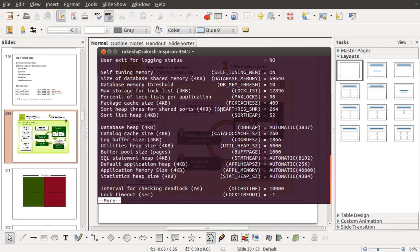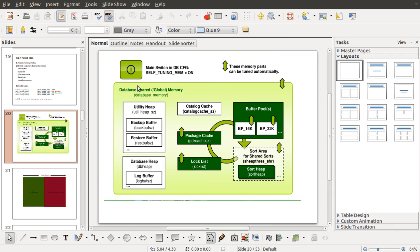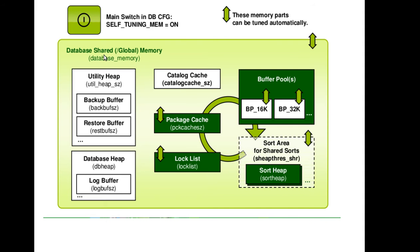Hello guys, in my last tutorial we saw about the self-tuning memory parameter, and in this class I will be talking about the database memory and the database memory threshold. So basically, what is database memory? To understand what is database memory, let's look at this PPT. I used the same slide on my self-tuning memory parameter where I said that database memory is part of the self-tuning memory. Now database memory itself can be divided into various memory consumers.